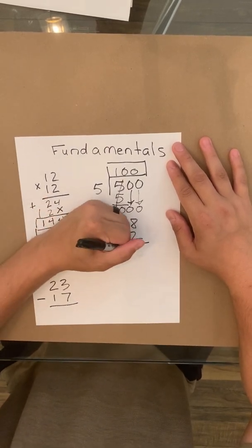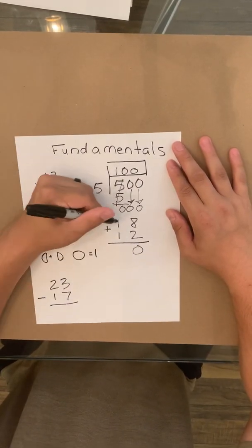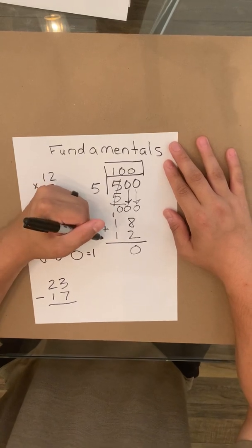Then addition, it's just simple addition. 8 plus 2 is 10, so you put a 0 right here, carry over the 1 up here. 1, 2, 3, it's going to make 30.